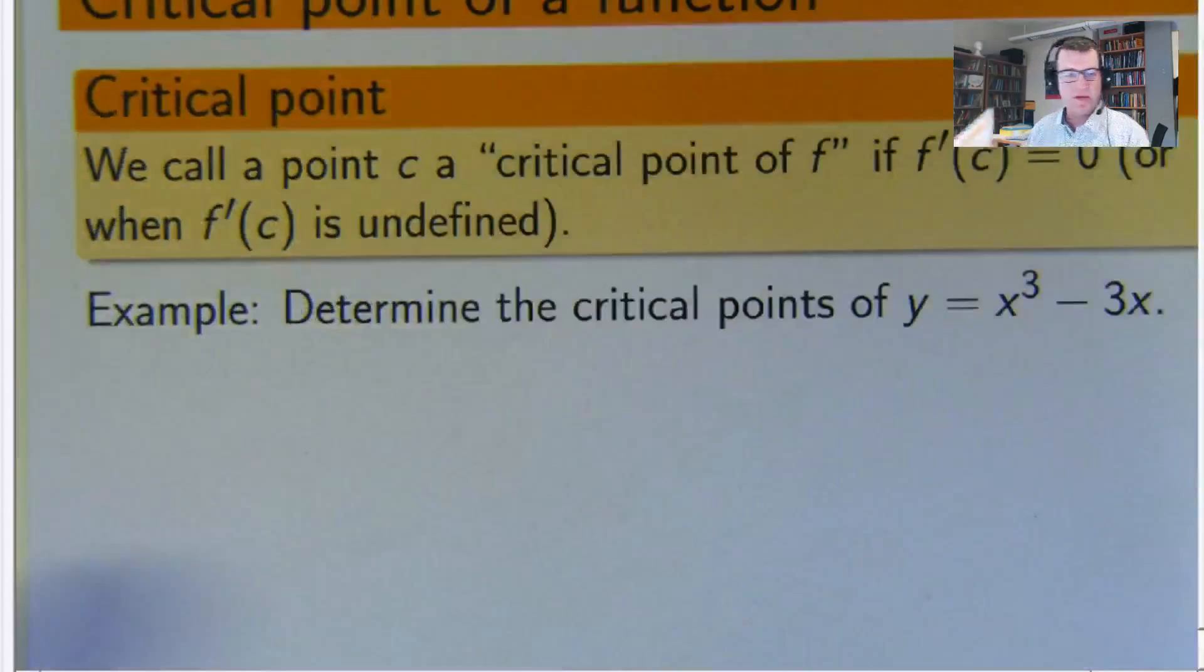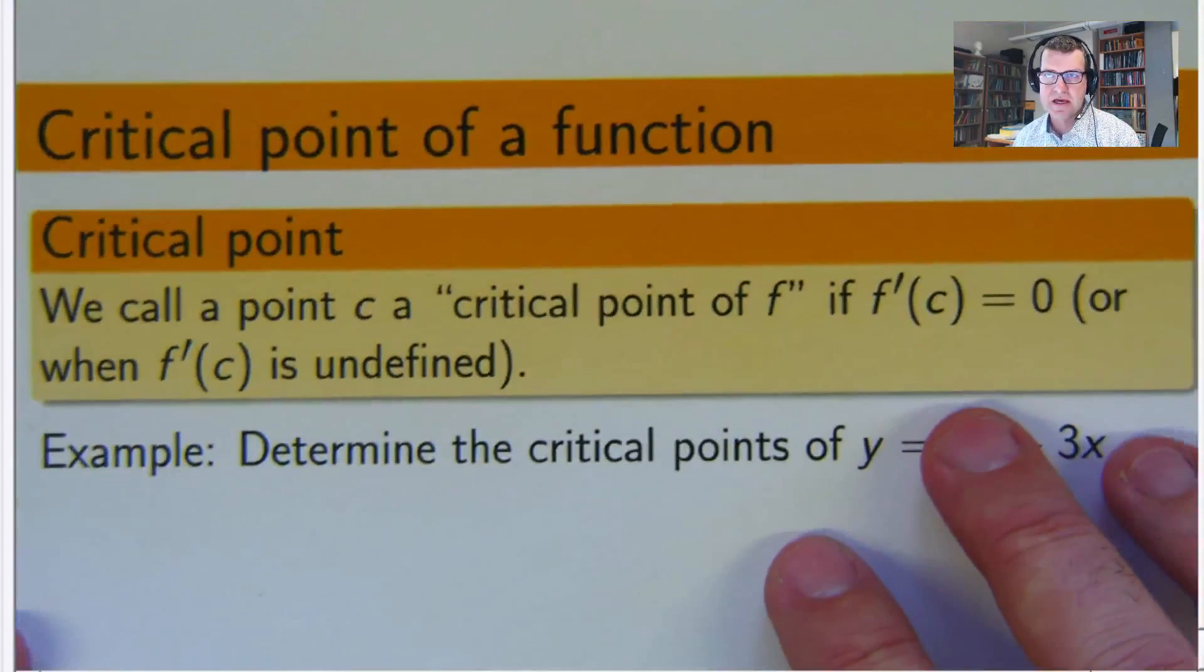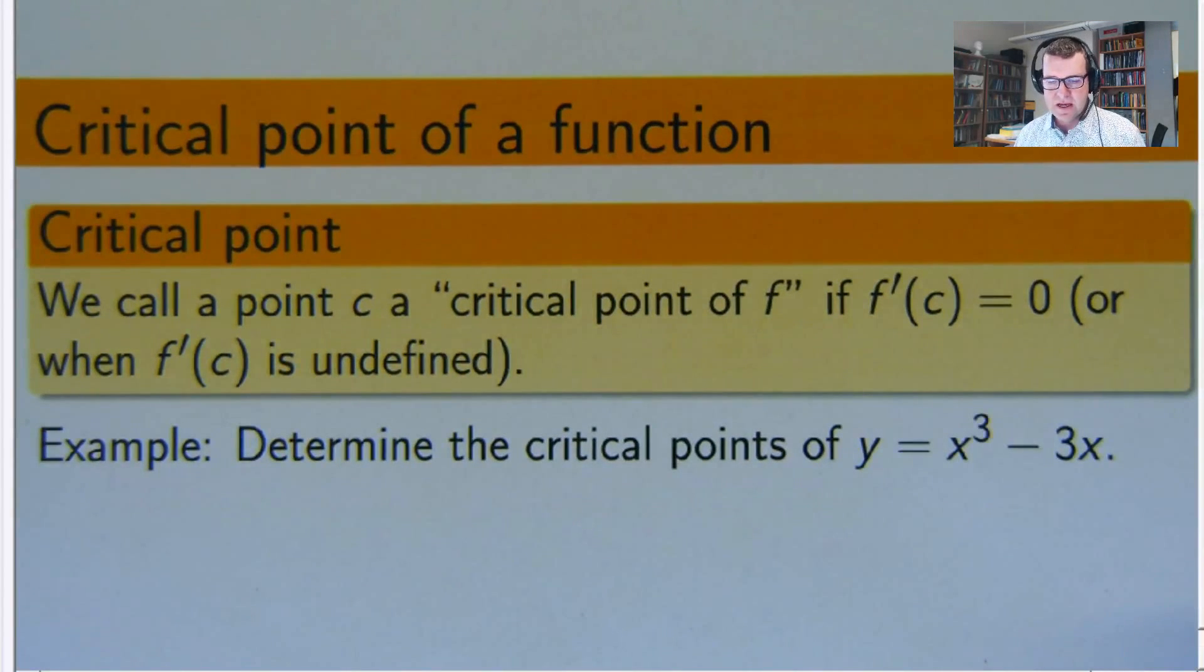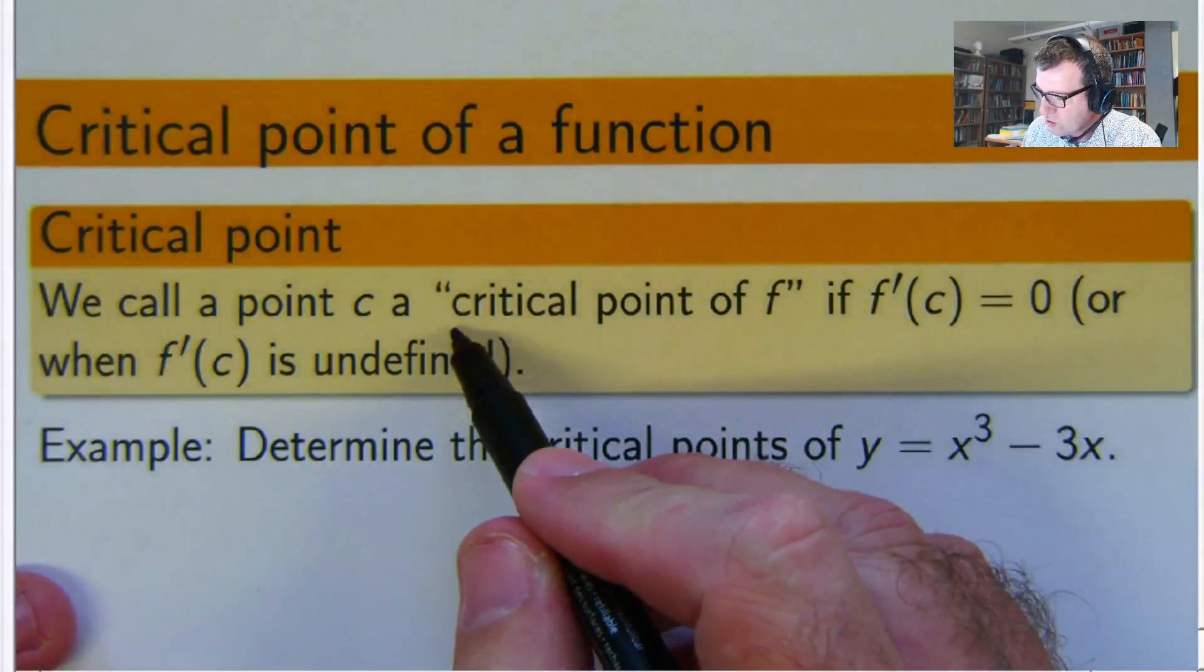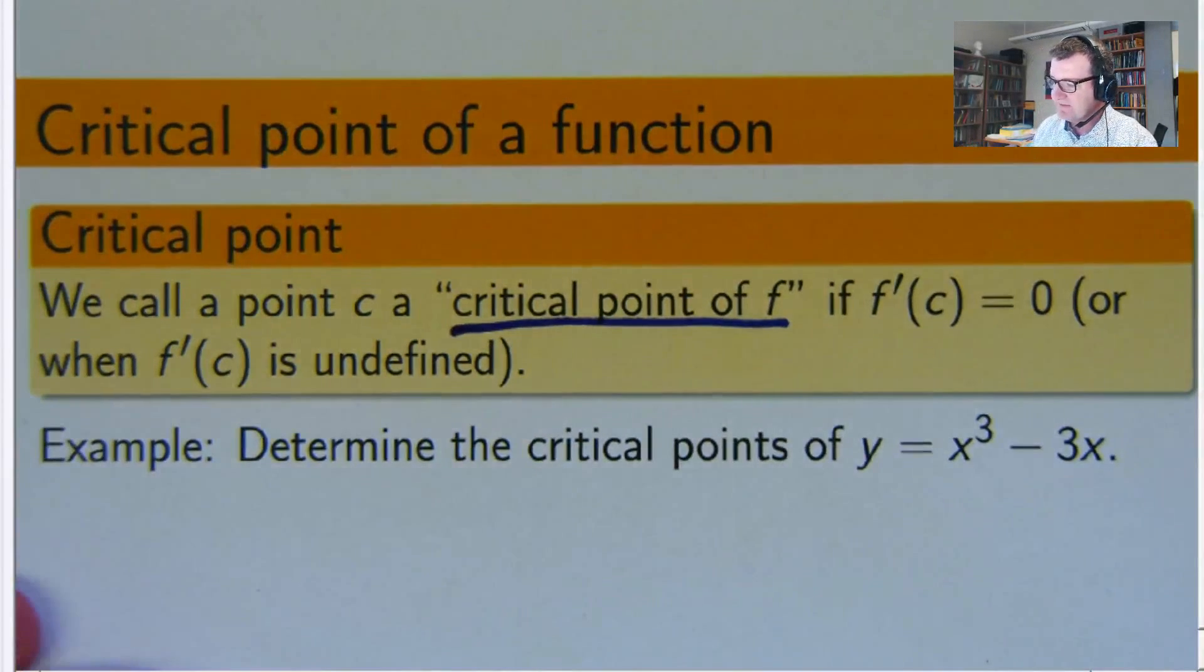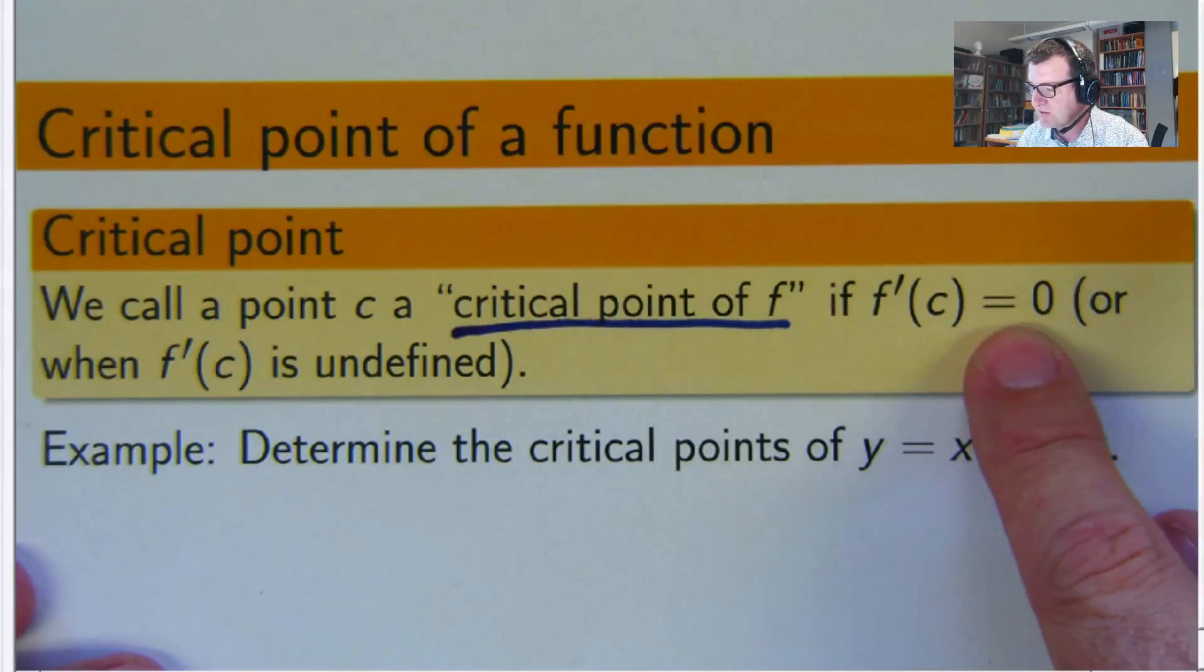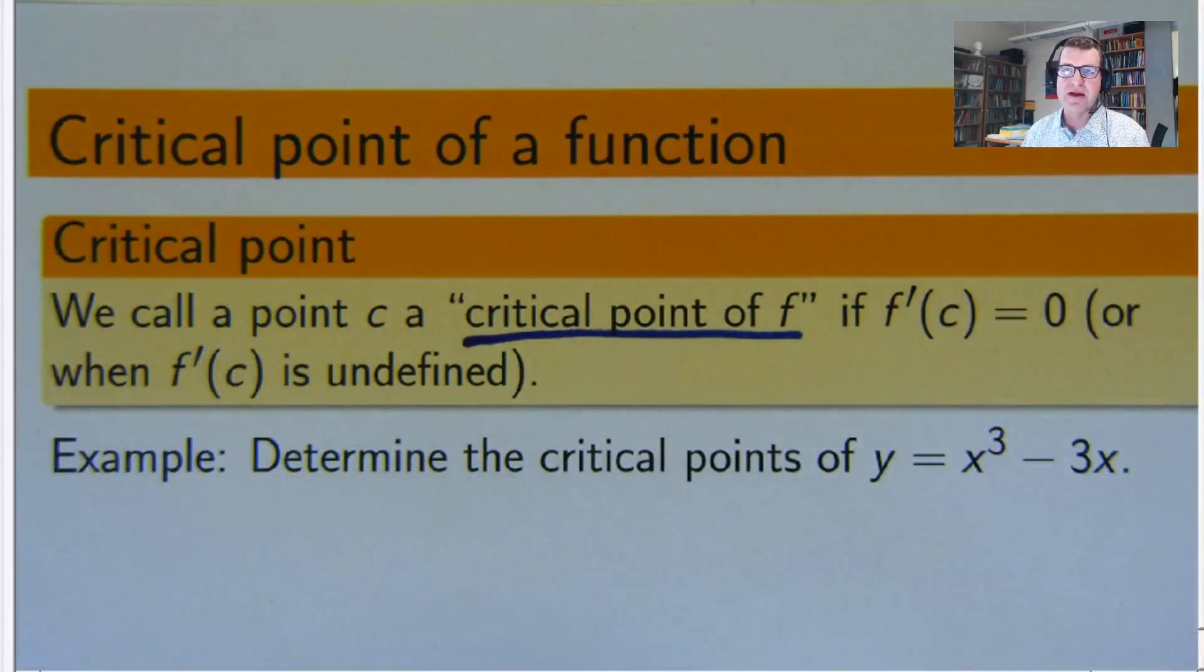Now in this video, we're going to move on and talk about the critical points of a function. So what is that? Well, it's contained in the following definition. We call a point c a critical point of a function if the derivative of the function at c equals 0. Now there is another bit here. We don't need to be worried about when the derivative is undefined. That's a separate issue. We'll just deal with nice friendly functions in these videos where the second case doesn't happen.